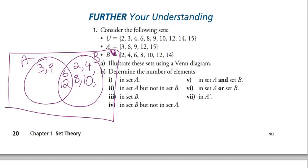So 6 and 12 are in the overlap. How many elements are in U? 10. We've accounted for everything. How many are in set A? 5 — that includes the overlap. How many are in set A but not in set B? 3. How many are in set B? 7. How many are in set B but not in set A? 5. How many are in set A and set B (the intersection)? 2. How many are in set A or set B (the union)? 10, because there's nothing outside the circles — everything in the box is A or B.